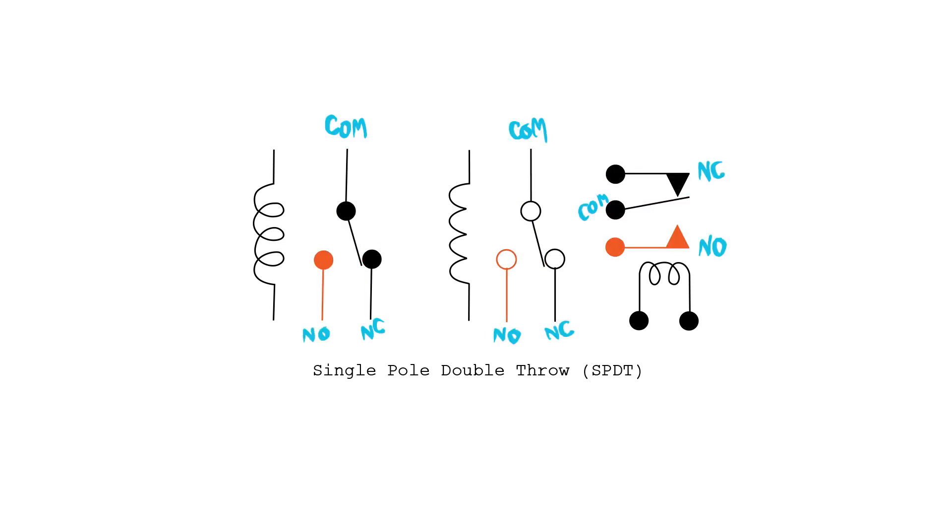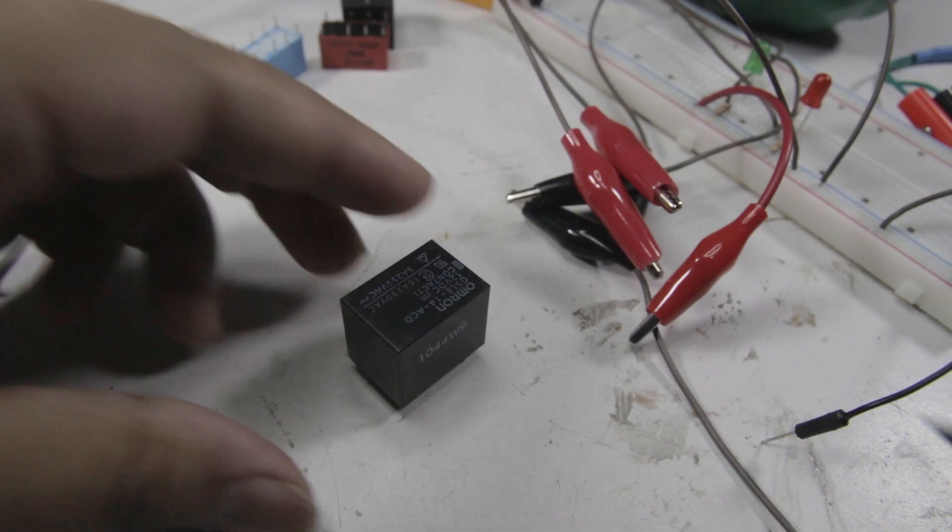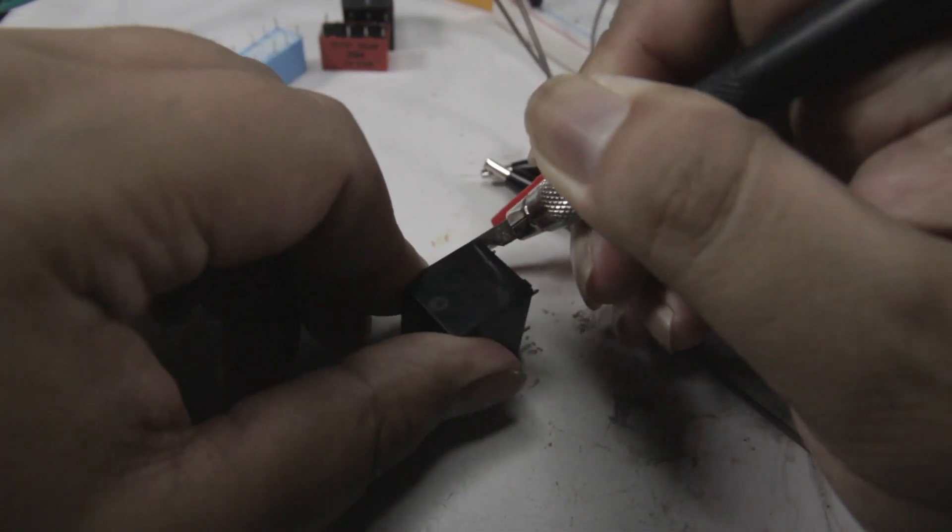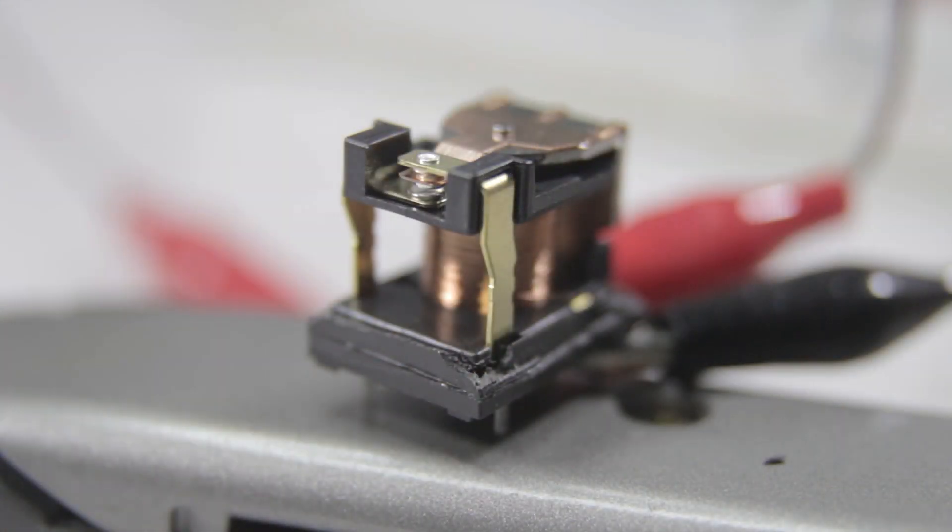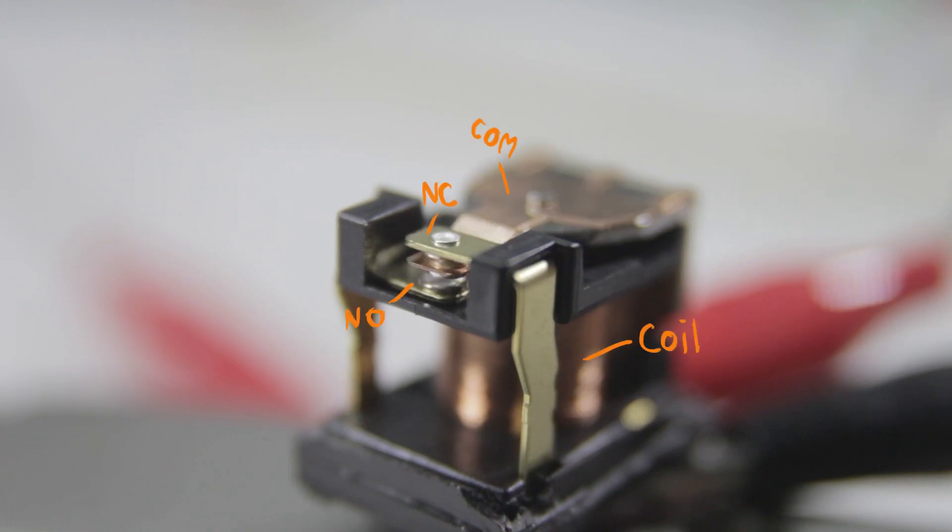Let's look at the inside of the relay. A small current flowing through a coil in the relay creates a strong magnetic field that pulls one switch contact against or away from another. There are two basic types of relay: latching and non-latching.